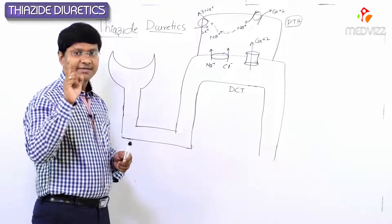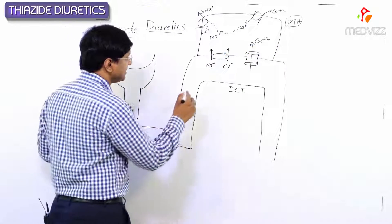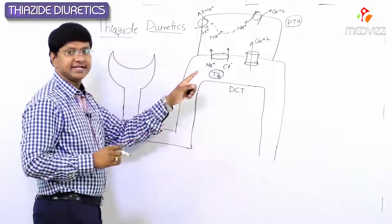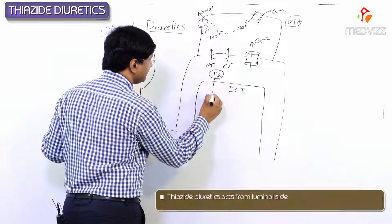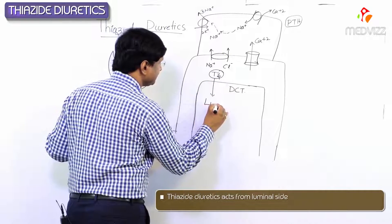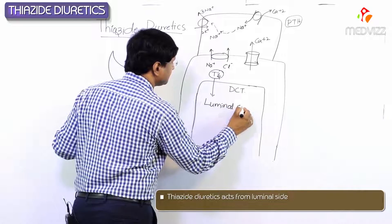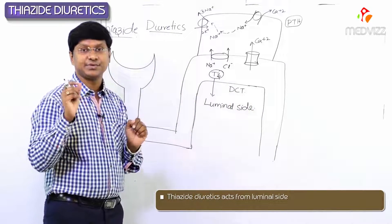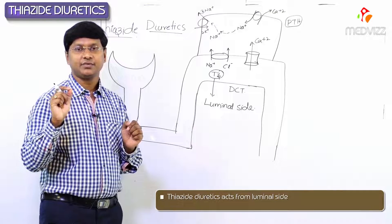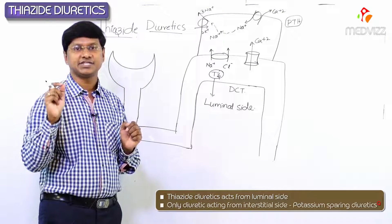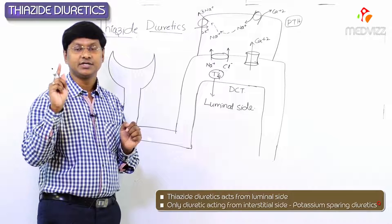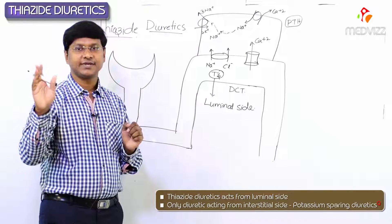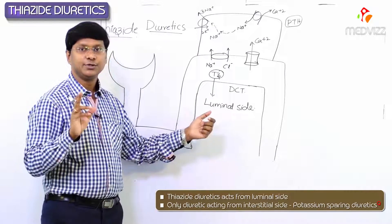Now the other important point to remember is that thiazide diuretics act from the luminal side. An important MCQ point here: the only diuretic which acts from the interstitial side is your potassium-sparing diuretics, whereas your loop diuretics and thiazide diuretics act from the luminal side.